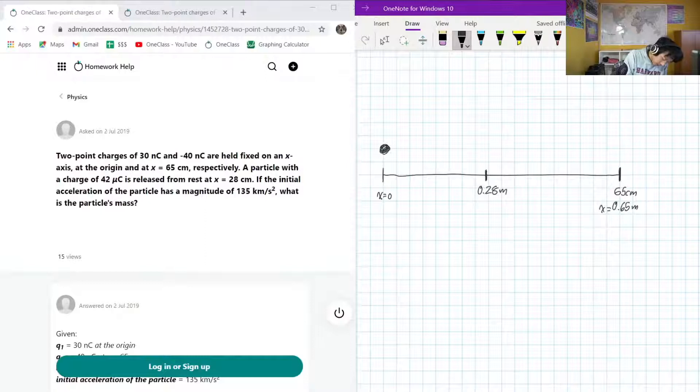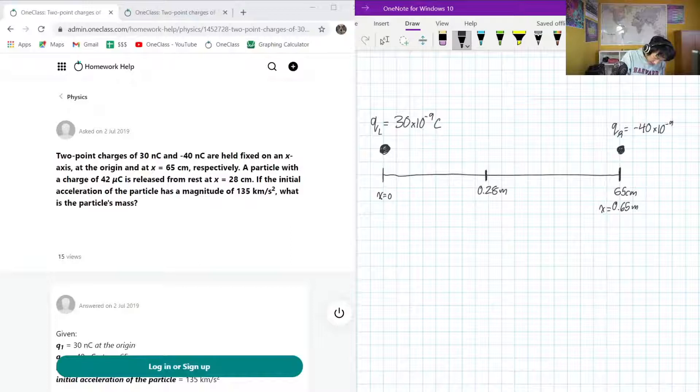Okay, and here we have a charge. Let's call this Q left, QL for Q left. And that is 30 times 10 to the negative 9 Coulombs. 10 to the negative 9 is the same as nanocoulombs. Here, let's call this QR because it's to the right of us, or to the right of the thing of interest.